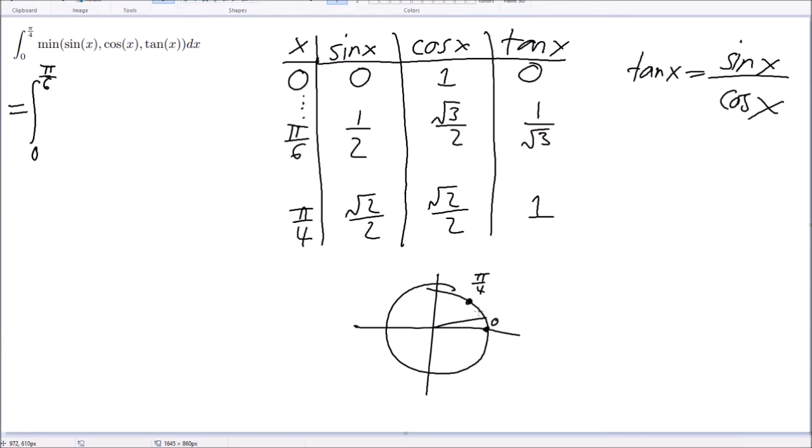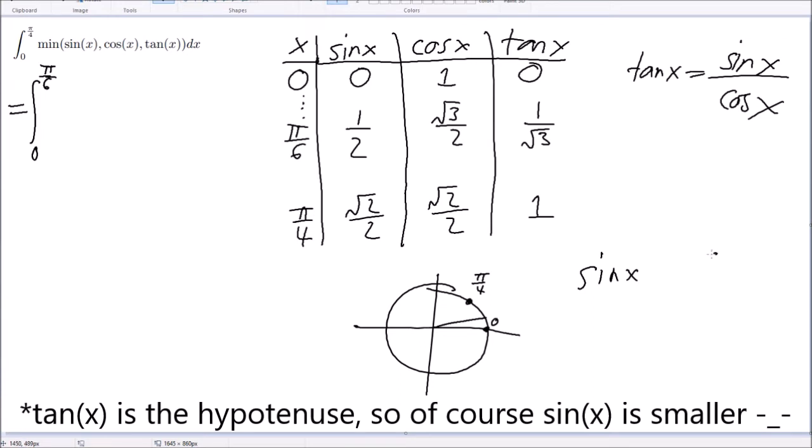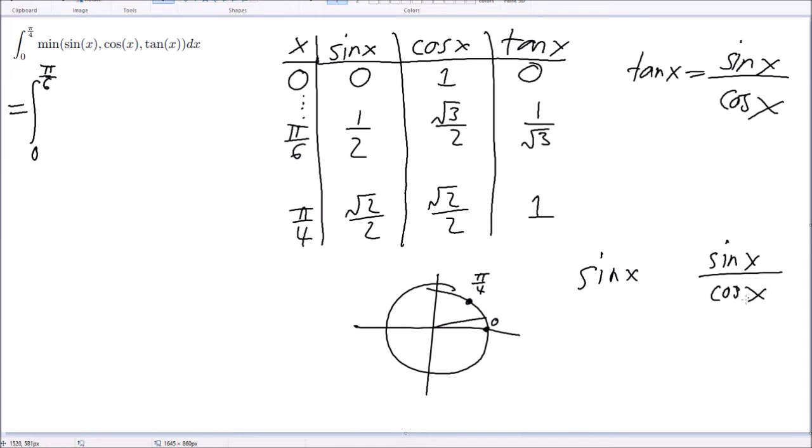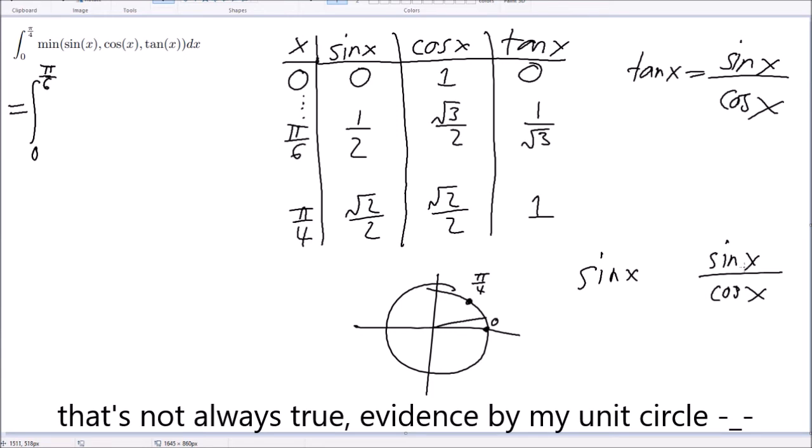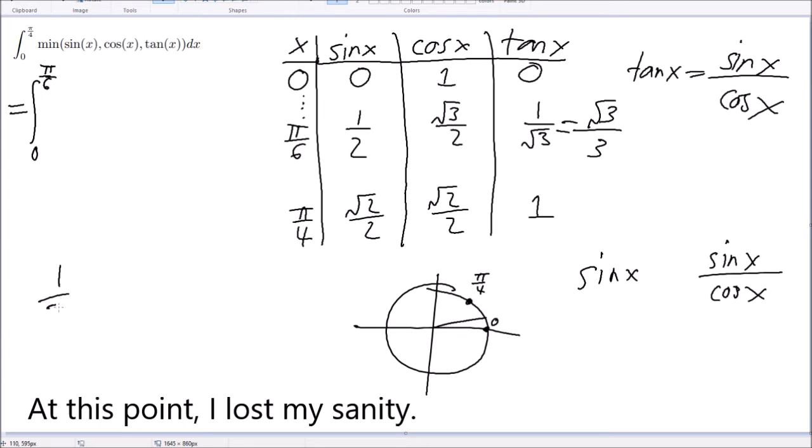So, because of that... Wait, but what's smaller? Wait, which is smaller, sine of x or tangent of x? I think tangent of x is smaller, because if cosine of x is bigger than sine of x, and cosine of x is at the bottom, then tangent x is gonna be smaller. Okay, which is bigger?